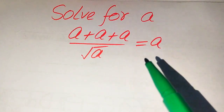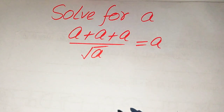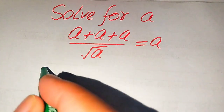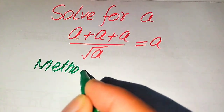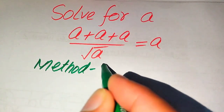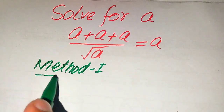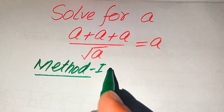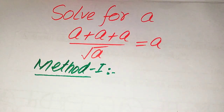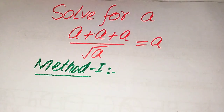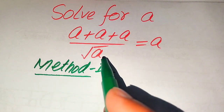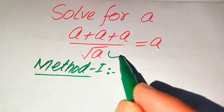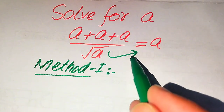We'll solve this problem using two methods. I hope you like both methods, but if you have any other method in mind, please don't hesitate to write it in the comment section. Now we move toward the solution using the first method. We first focus on the denominator term and move it to the right-hand side.